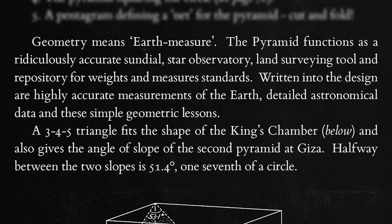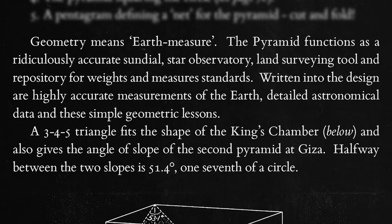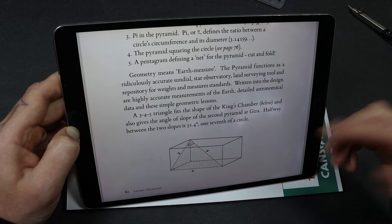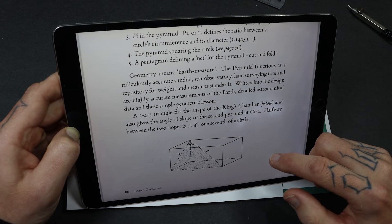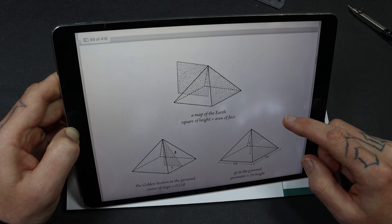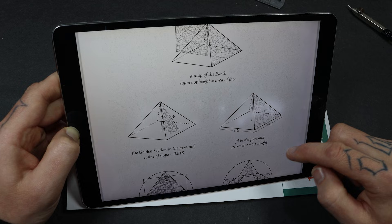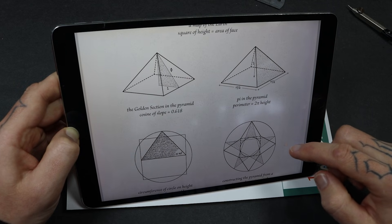A 3-4-5 triangle fits the shape of the king's chamber and also gives the angle of slope of the second pyramid at Giza. See, I wonder if this is, I wonder how much truth there is in this. Like, how, how did they measure the pyramid and how do they know exactly the size and angles and everything? Maybe it's not that hard to do. I don't know.